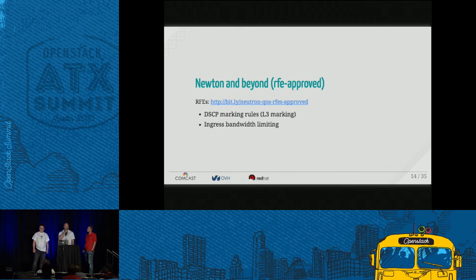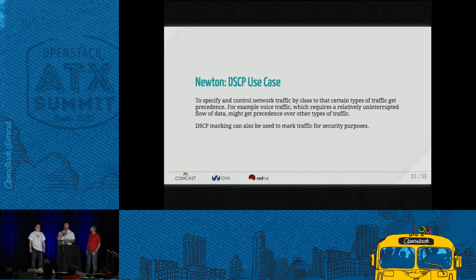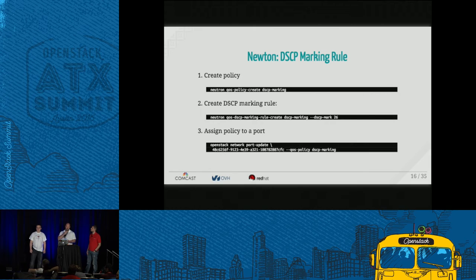There are also a few new things coming up in Neutron: DSCP marking rules and ingress bandwidth limiting. We wanted to add DSCP markings for Comcast because we want to prioritize and mark traffic so that certain types of traffic get more attention than others, and also for security reasons — to allow only certain types of traffic into various spots on the network. To implement DSCP marking, we modified the Neutron client and the API: creating a policy, then creating a marking rule and assigning it to that policy, then assigning the policy to a port.